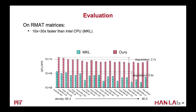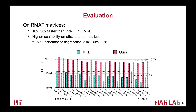We also evaluate the performance of our design on synthesized matrices to see how performance varies across different densities. Spark can on average achieve around 10 to 60x faster than the Intel CPU MKL library. Our design is also more stable and scalable as the matrix density decreases from 6×10⁻³ to 5×10⁻⁵. Compared to MKL, our performance degradation is smaller: MKL has a degradation of around 6x, while our design has only around 2.7x.